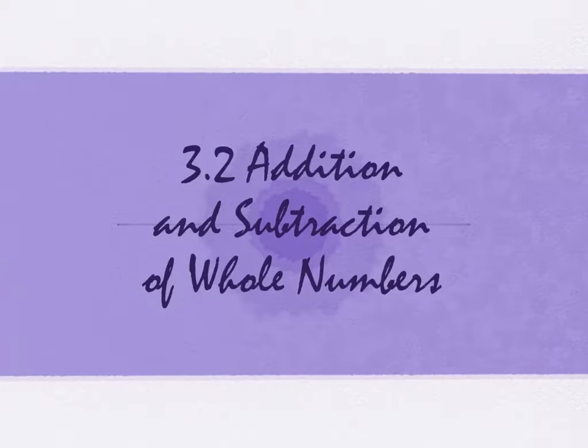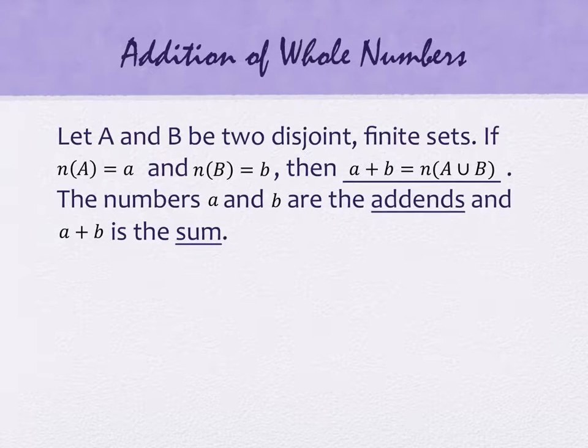We're going to start 3.2 with what it means when we talk about addition. By definition, if you have two disjoint sets A and B, and if the number of items in set A is little a, and the number of items in set B is little b, then the small values a plus b is the number of items in the union. We call A and B the addends, and you call the result from addition a sum.